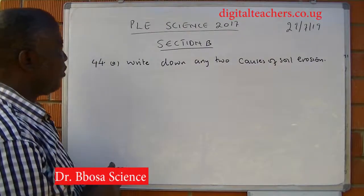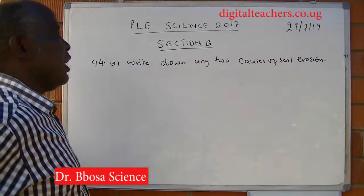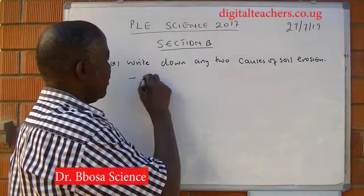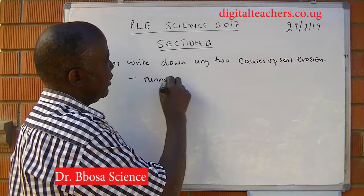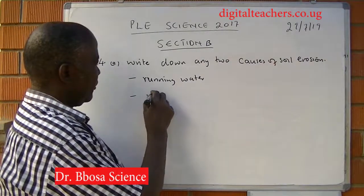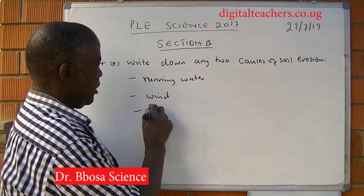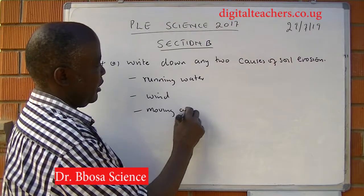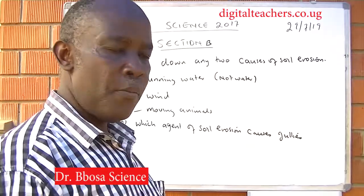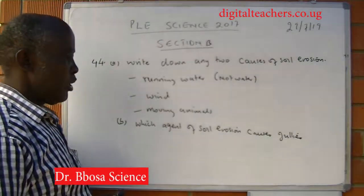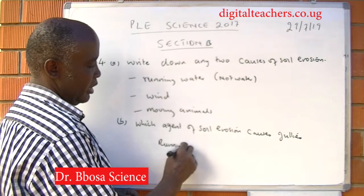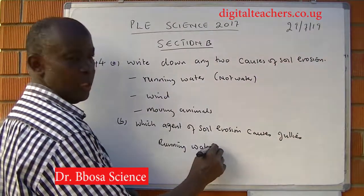Number 44a: write down any two causes of soil erosion. That is running water and wind, moving animals. Which agent of soil erosion causes gullies? That is running water.